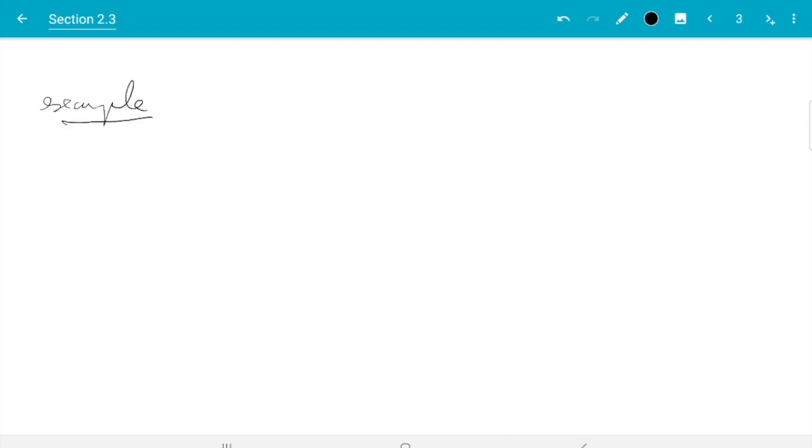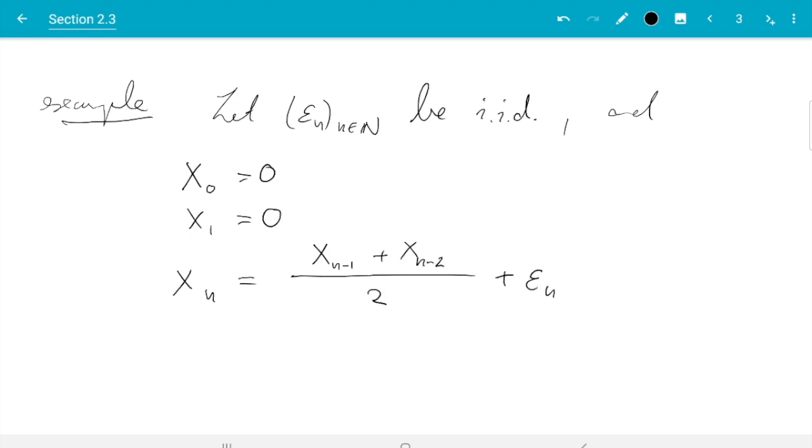Let's do an example of a process which is not a Markov chain. As before, (εn)n∈N be i.i.d. - that still means a sequence of independent and identically distributed random variables. X0 = 0, X1 = 0, and Xn = (Xn-1 + Xn-2)/2 + εn for all n starting at 2.